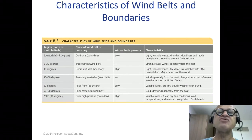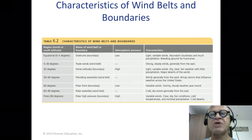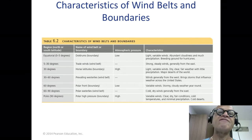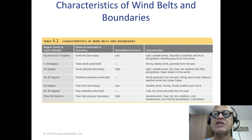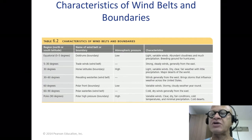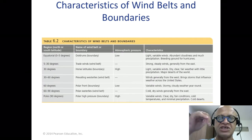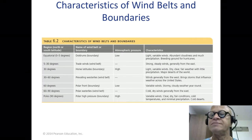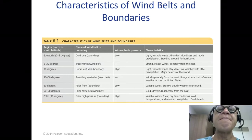Between 5 degrees latitude to 30 degrees, you have the trade winds on either side — strong, steady winds generally from the east, so you have the northeast and southeast trade winds. At 30 degrees you have the horse latitudes again: light and variable winds, dry, clear, fair weather because of the sinking air and high pressure, and little precipitation. This is where the major deserts of the world occur.